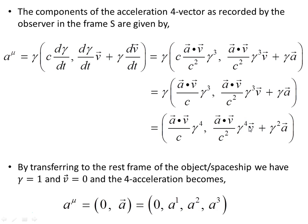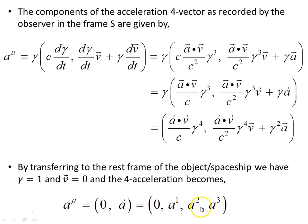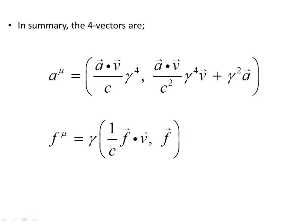Transferring to the rest frame of the spaceship, where v = 0 and γ = 1, the four-acceleration reduces to just the three spatial acceleration components a1, a2, a3 — which is the acceleration experienced on the spaceship. In summary, the four-acceleration vector and the four-force vector have been derived as observed in frame S, completing the main results of this video.